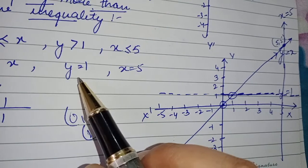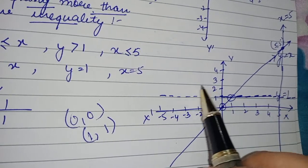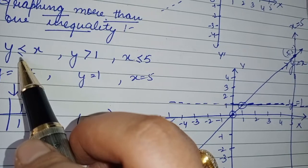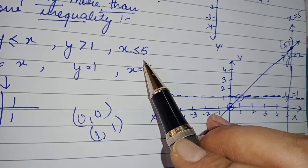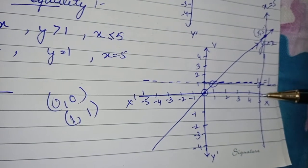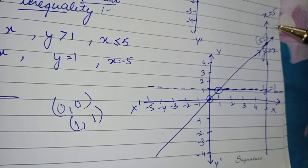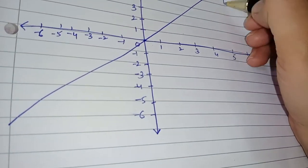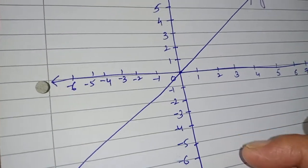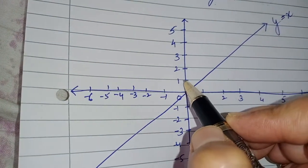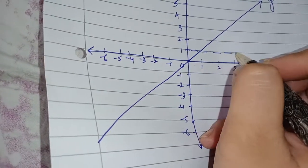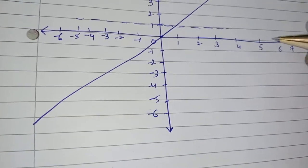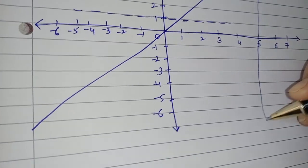Next is y equal to 1, which is a horizontal line. Since we don't have the equality sign in the original inequality y greater than 1, it will be a dotted line. For y less than or equal to x, we had an equality sign, so that was a solid line. Next, x less than or equal to 5 means the line x equal to 5. We have equality here also, so it will be a solid line.